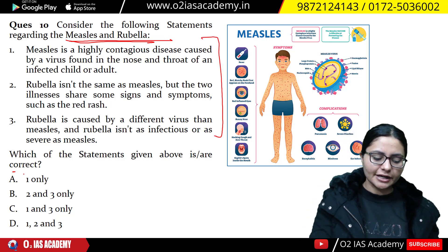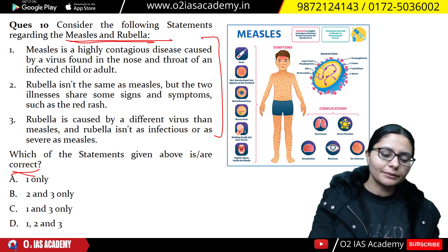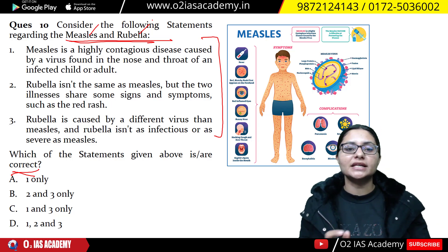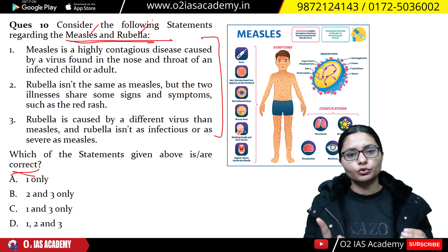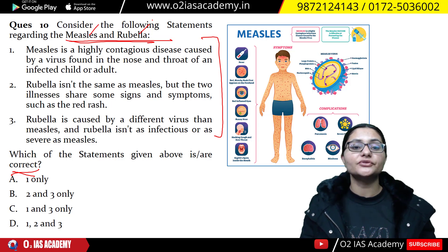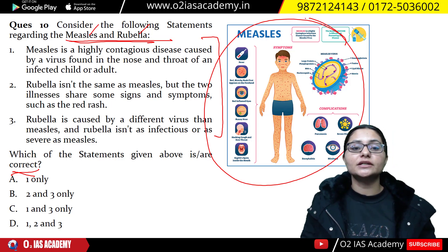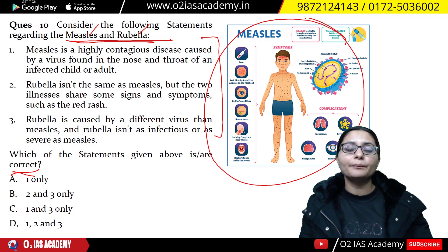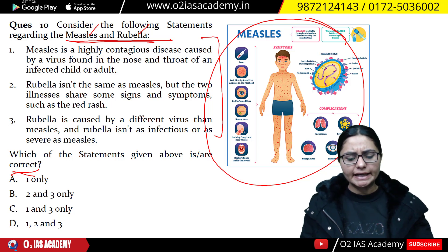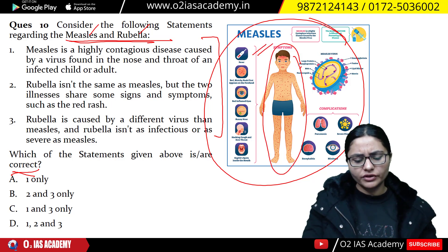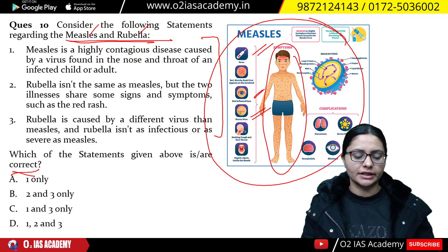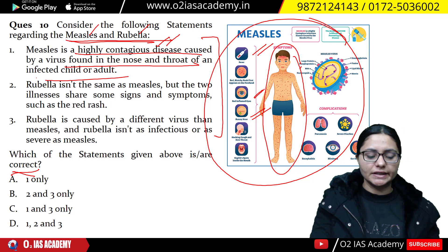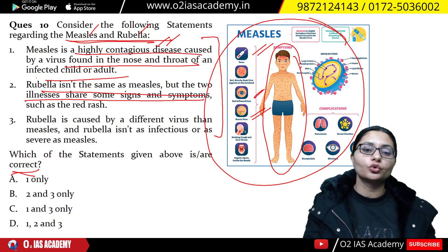Regarding this question, three statements are given and you have to identify the correct ones. First, measles and rubella — they are not caused by the same virus. Measles is caused by the measles virus, and rubella is caused by the rubella virus. However, when these two viruses enter the body, they show similar symptoms: nasal congestion, rashes, fever, inflammation of eyes, runny nose, and especially the nasal chamber and throat are also affected. They are highly contagious diseases.